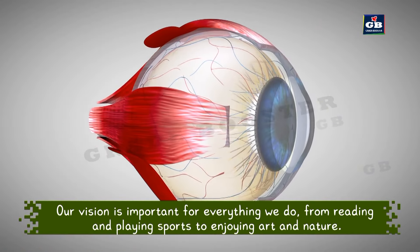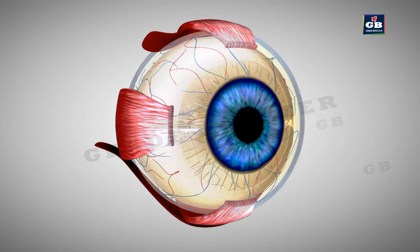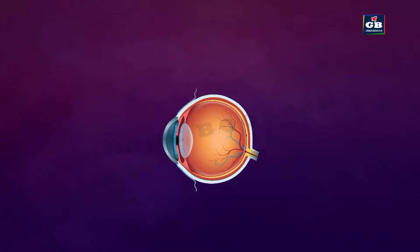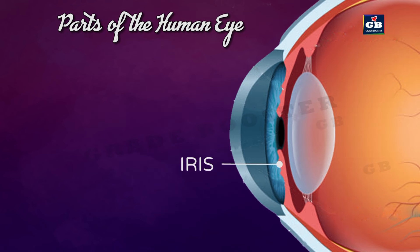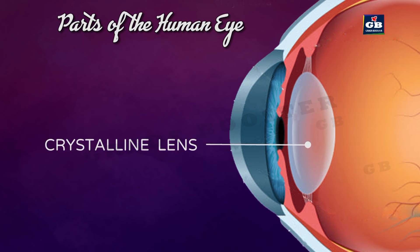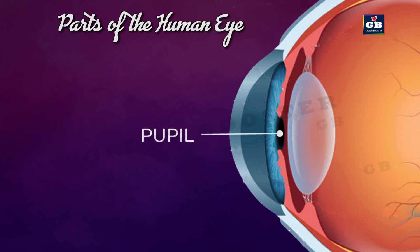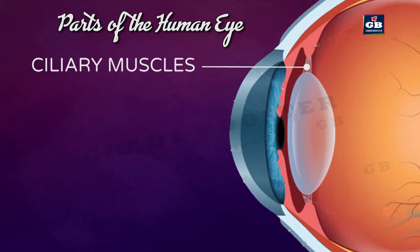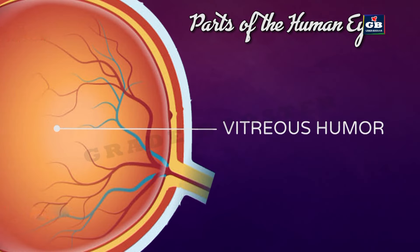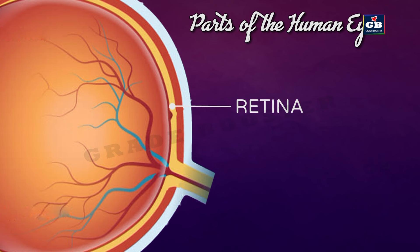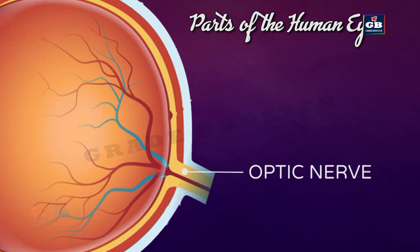Let us begin this chapter with the structure and functions of the human eye. Parts of the human eye: This is the cornea. This is the iris. This is the crystalline lens. This is the pupil. These are the ciliary muscles. This is the aqueous humor. This is the vitreous humor. This is the retina. This is the optic nerve. And this is the blind spot.